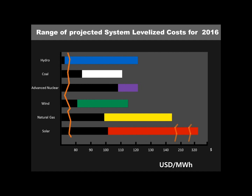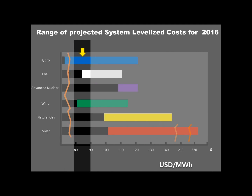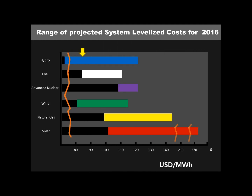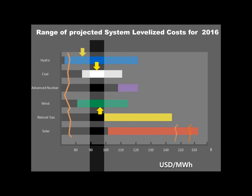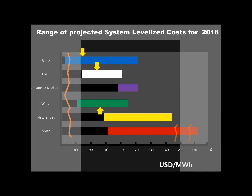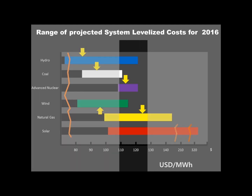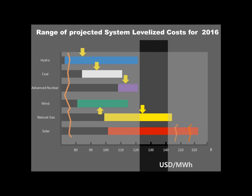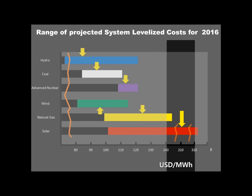This table shows the estimated cost of electricity by source for plants entering service in 2016. The average cost of hydro is $86.4. Coal and wind average approximately $95. Advanced nuclear average cost is $114, while solar is the most expensive with an average cost of over $210.